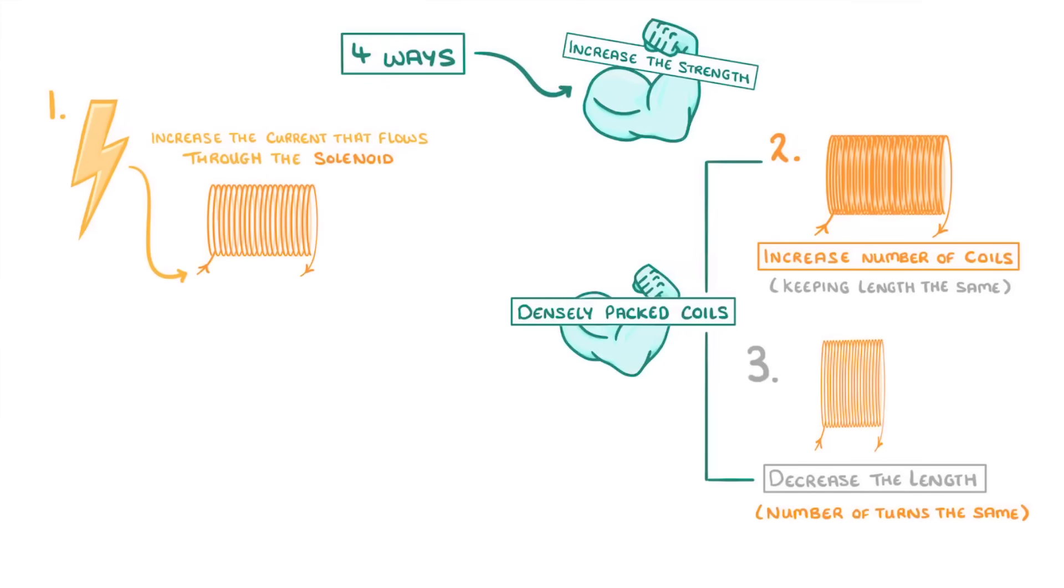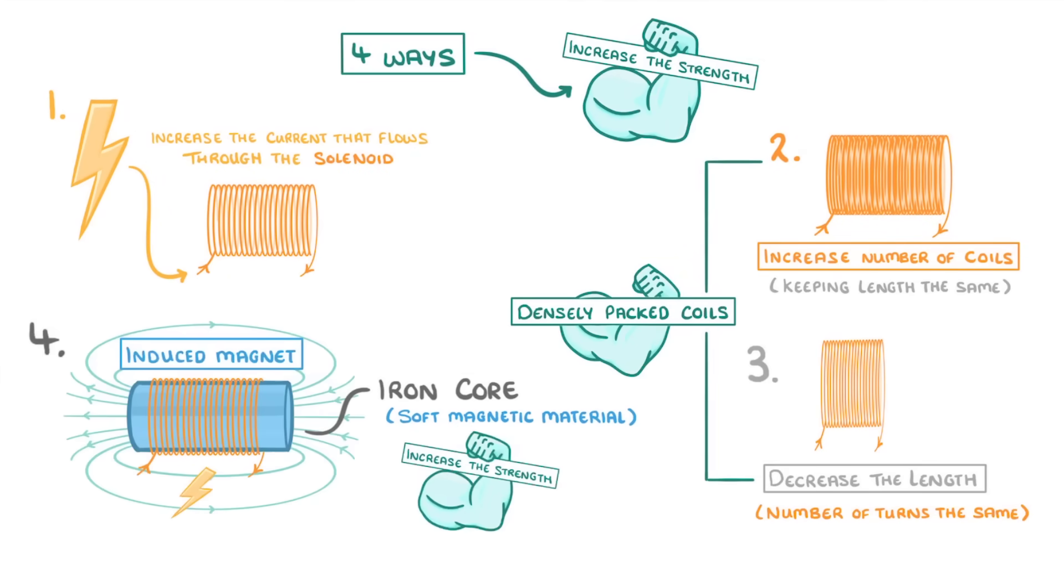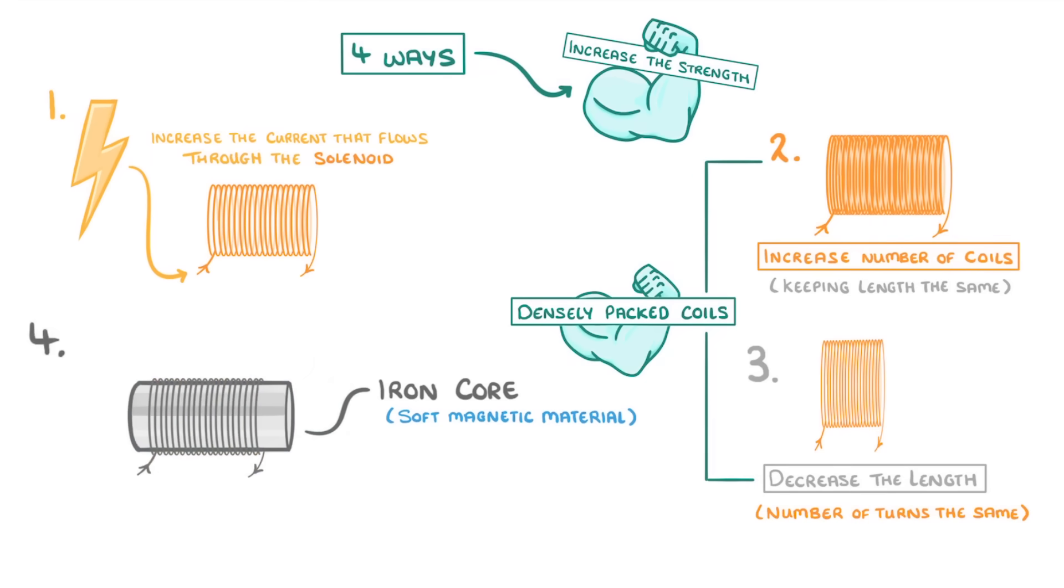The last thing we can do is add an iron core to the inside of our solenoid. As iron is a soft magnetic material, it will become an induced magnet when the solenoid is switched on, which will massively increase the strength of the electromagnet's magnetic field. But importantly, it will also lose its magnetic field as soon as the current is turned off.